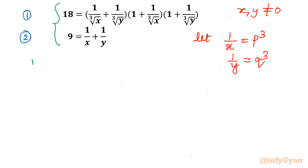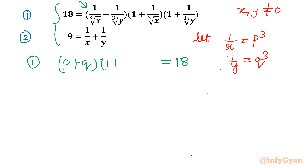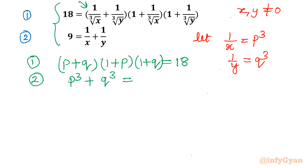Let me write equation number 1 again with 18 on the right-hand side. Now 1 over cube root x becomes p, and 1 over cube root y becomes q. The second bracket becomes 1 plus p, and the last term is 1 plus q. For equation number 2, 1 over x is p cubed and 1 over y is q cubed, equal to 9.